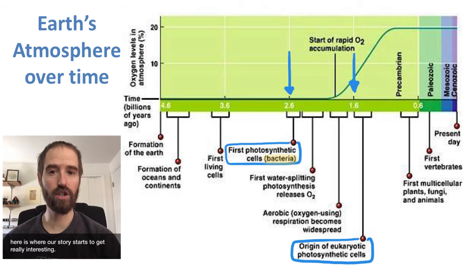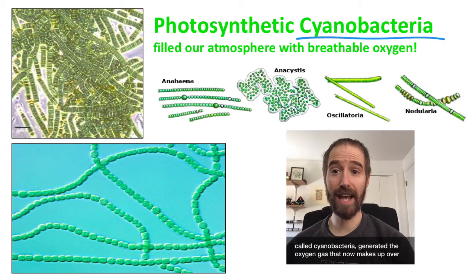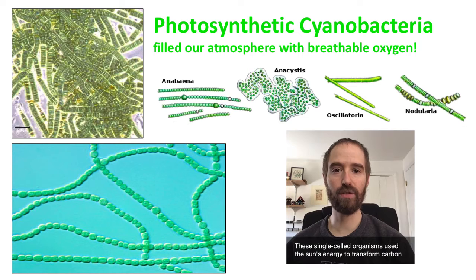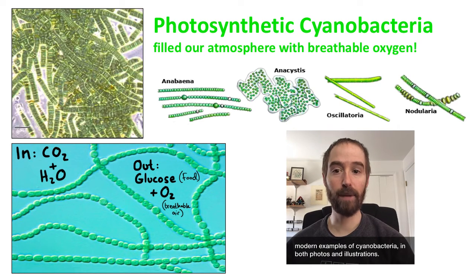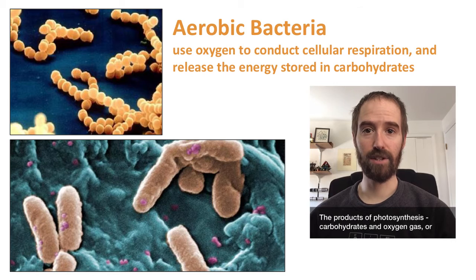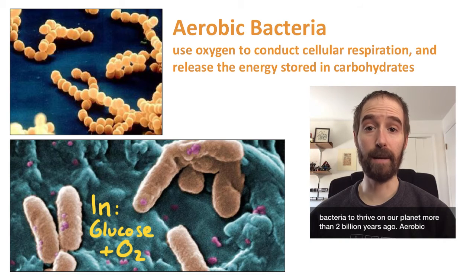And here is where our story starts to get really interesting. Over a period of about a billion years or more, photosynthetic prokaryotes called cyanobacteria generated the oxygen gas that now makes up over 20% of our atmosphere, and upon which life on our planet depends. These single-celled organisms used the sun's energy to transform carbon dioxide in the atmosphere into organic carbon compounds and oxygen gas — basically, they were making food and breathable air. Here we see a few modern examples of cyanobacteria in both photos and illustrations. The products of photosynthesis — carbohydrates and oxygen gas, or food and breathable air — provided the means for aerobic bacteria to thrive on our planet more than two billion years ago.